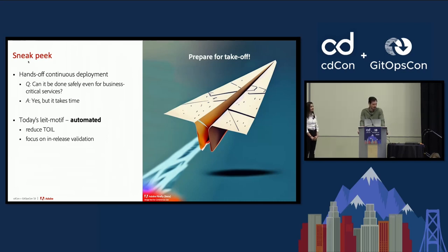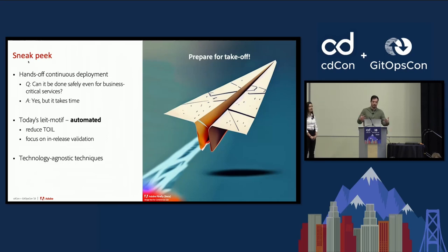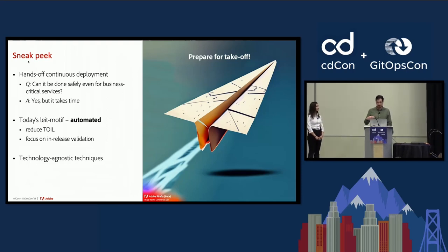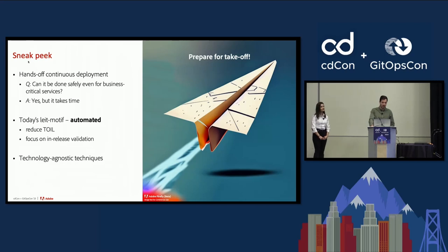By removing repetitive work, engineers can focus on what they do best: innovating. This is why our leitmotif today is automation. The techniques we'll be presenting are technology agnostic, so they can be adopted regardless of the CI or CD tools you and your teams are using. Even if we are using Spinnaker and Jenkins today to deploy our applications in Kubernetes clusters, we'll keep the same practices when migrating to something else.